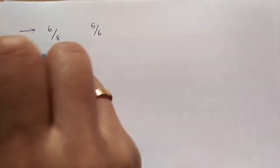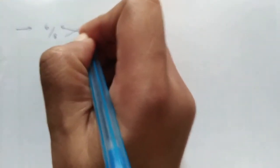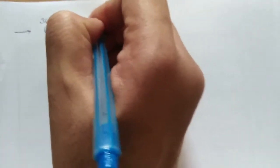There is a trick to find which one is larger: cross multiplication. 6 times 6 is 36. 8 times 5 is 40. Here the largest value is 40, so this one is largest. 5/6 is largest.